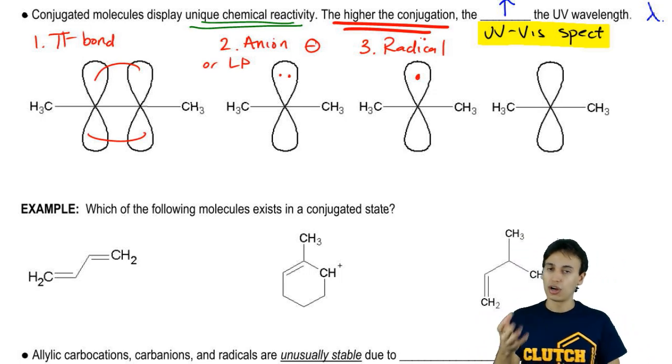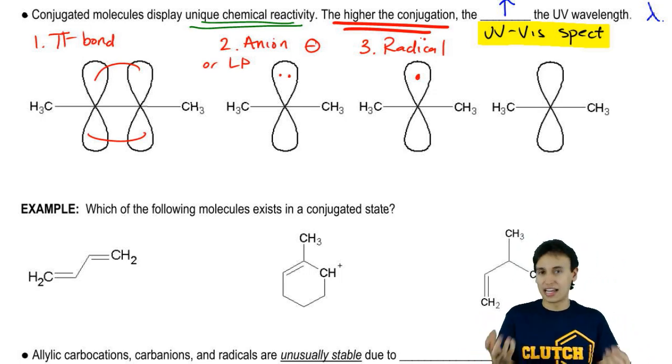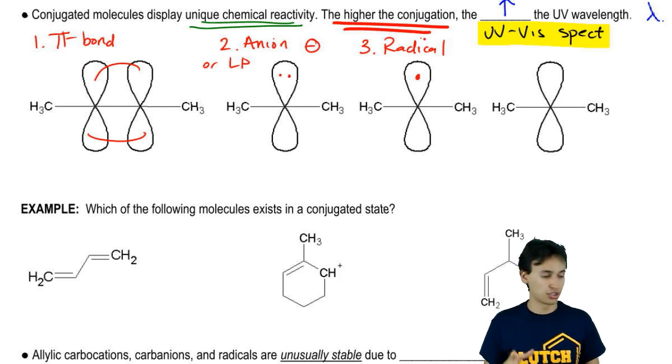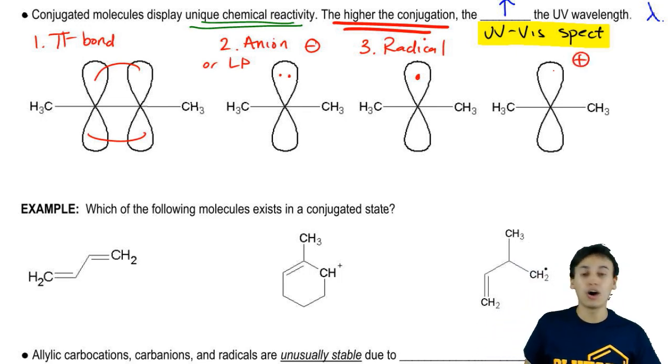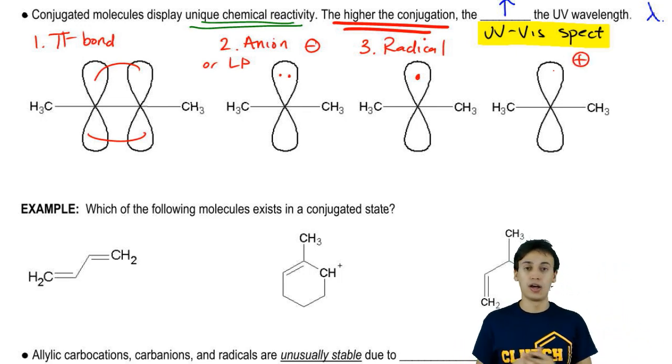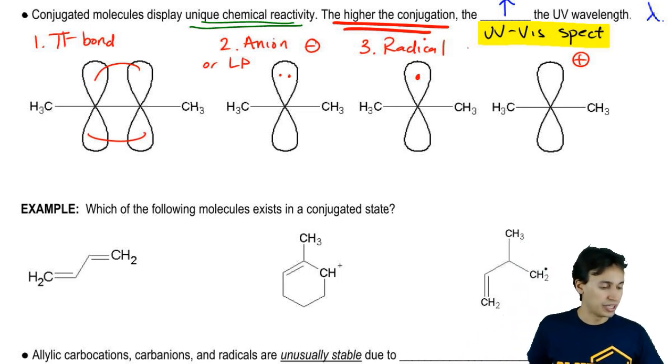So radicals can also conjugate. And the last idea would be, well, how if we put zero electrons in there, then that would be a positively charged atom. So that would be a cation.